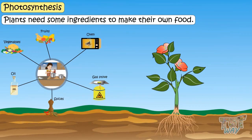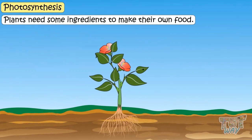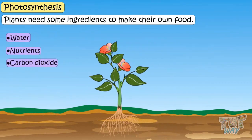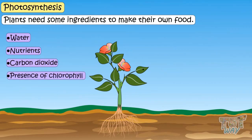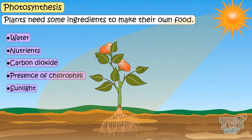Similarly, plants require water, nutrients, carbon dioxide, and the presence of chlorophyll. And also some energy — that is sunlight — to prepare their food. Now let's learn about each ingredient the plants need to prepare their food.